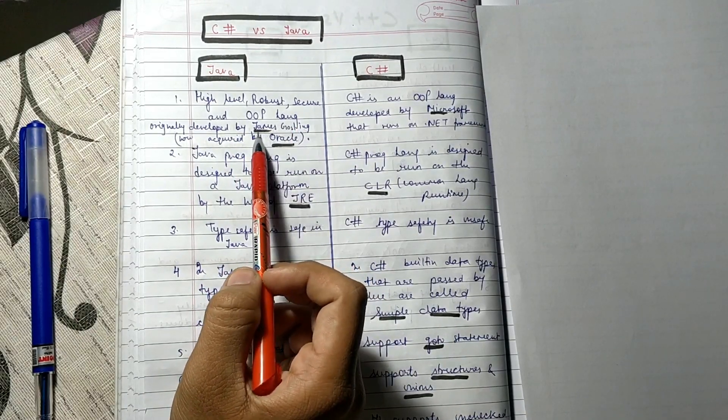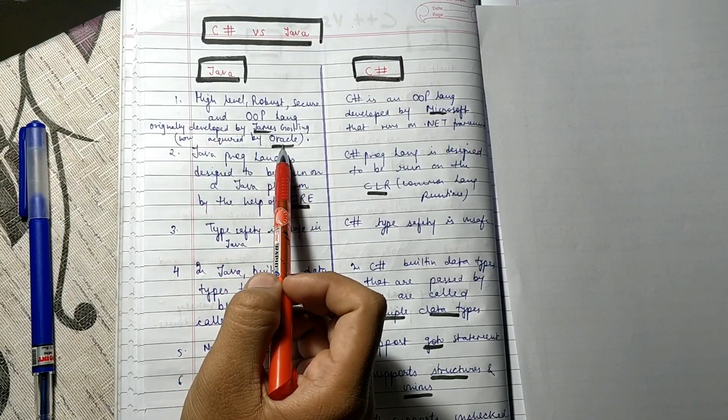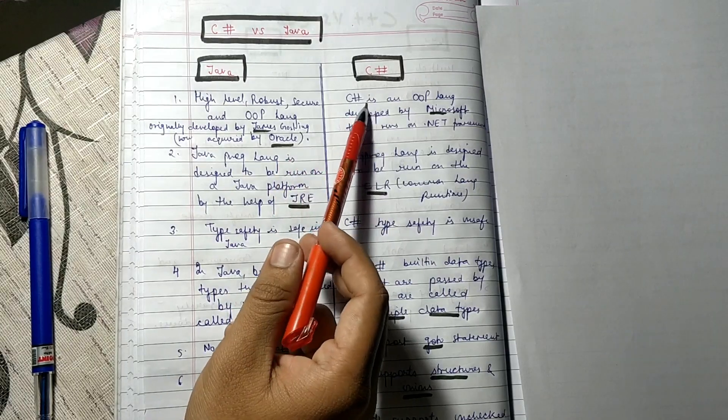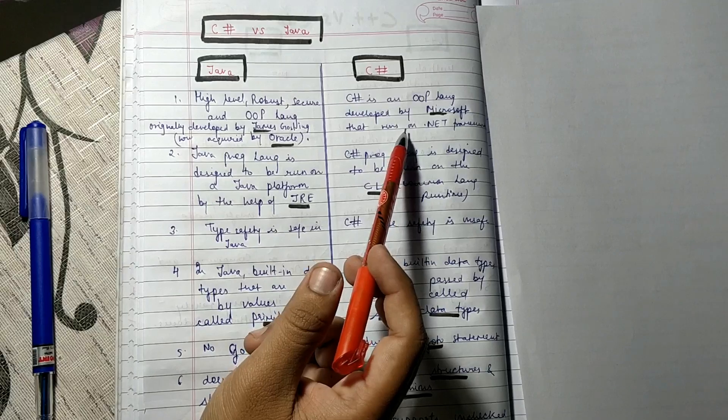Java was originally developed by James Gosling and his team, but now it is acquired by Oracle. Oracle bought it in 2010. C# is an object-oriented programming language which was developed by Microsoft.